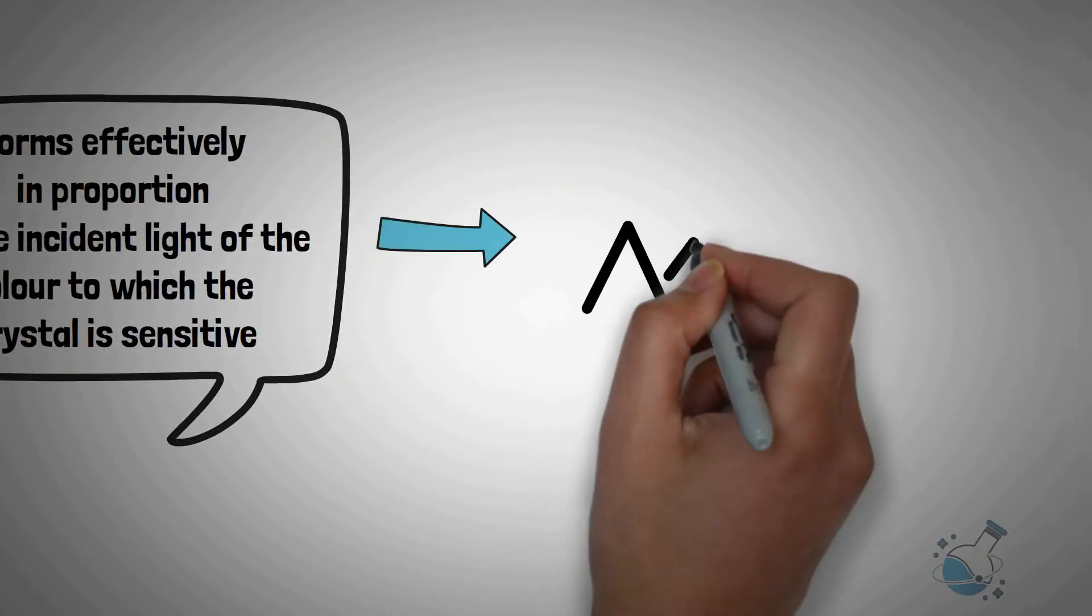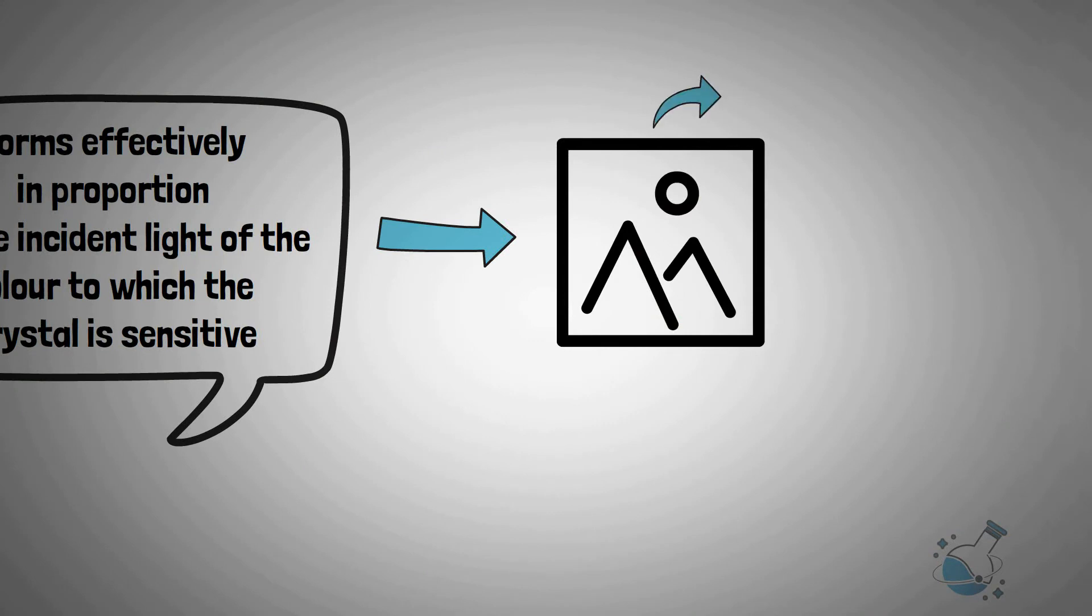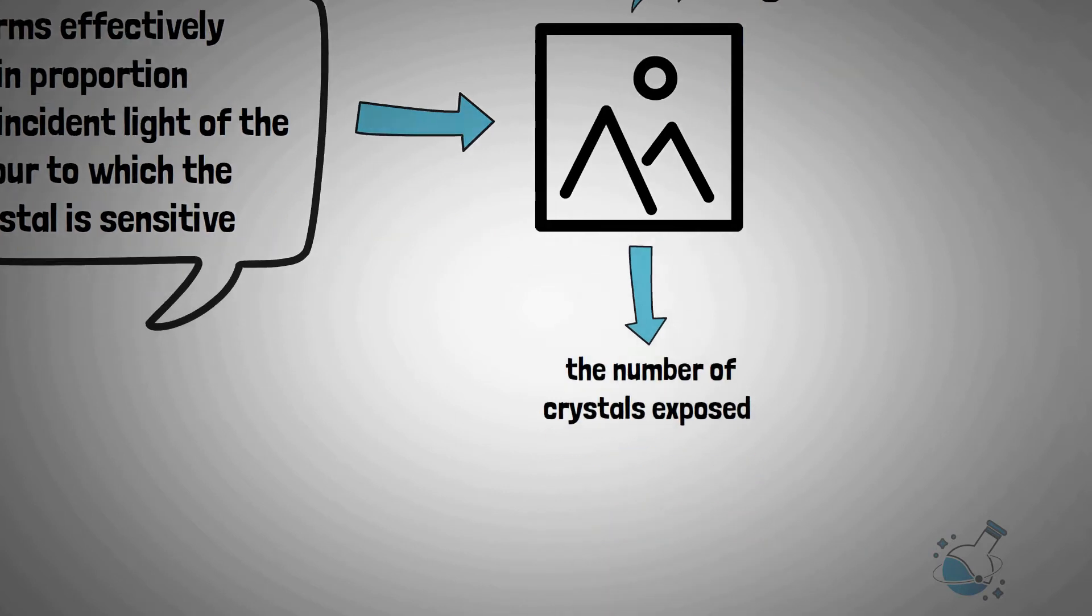Thus, an object is produced in the form of a dark image. The result of this process described here is negative. The density of the image depends upon the number of crystals exposed.